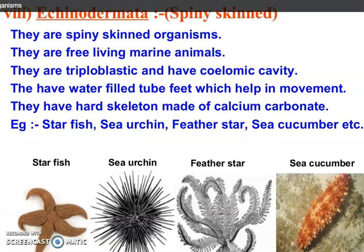Next phylum is Echinodermata from invertebrata. They have spiny skin. They are free-living marine animals. They are triploblastic and have a coelomic cavity. They have water-filled tube feet which help in movement. Their exoskeleton is made up of calcium carbonate. For example, starfish, sea urchin, feather star, sea cucumber, etc.